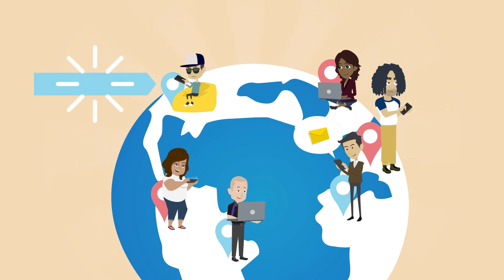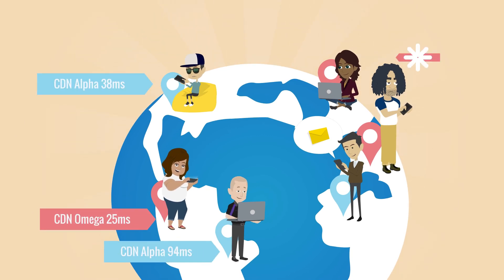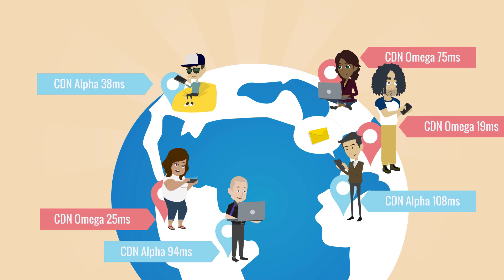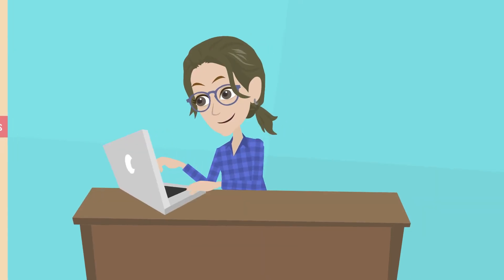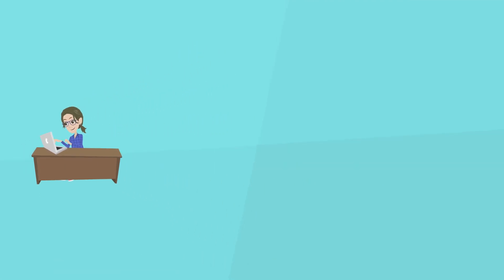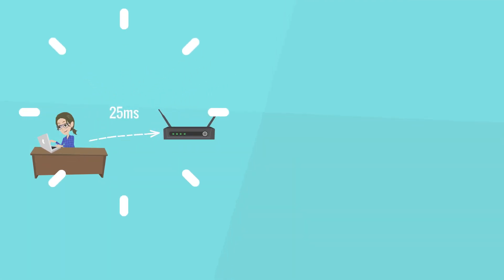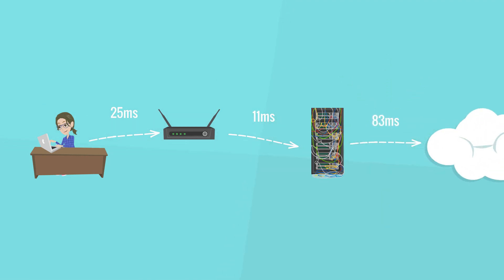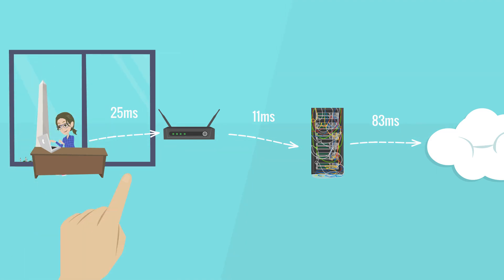That's data grabbed from actual users' browsers. So whenever a traffic-steering decision is made, it's actually based on dozens, even hundreds of thousands of users' experiences. All of this data allows us to paint a picture of the current state of the internet that is so accurate that we can actually predict which cloud provider is fastest for each of your website visitors depending on their location and their network.